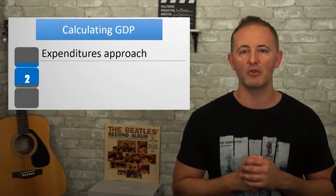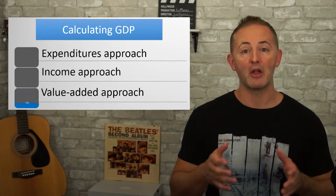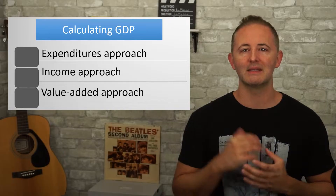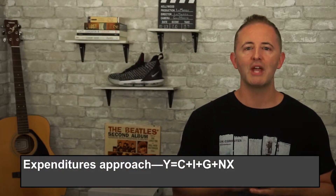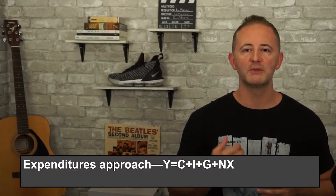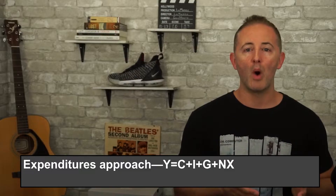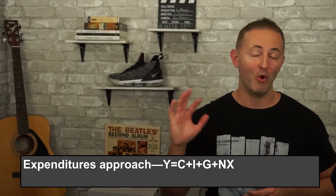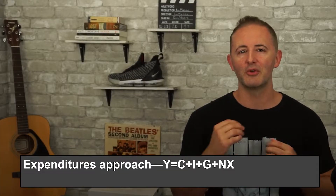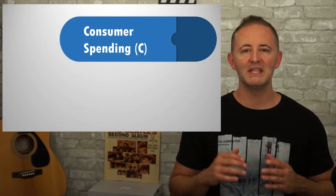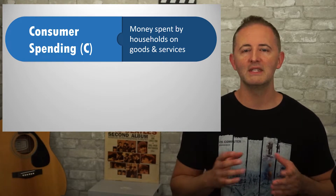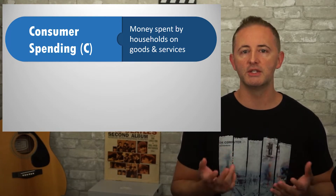There are three ways to calculate GDP, so that's our next job — learning how to calculate GDP. By far the most important way is known as the expenditures approach, which adds up total spending in the economy: Y equals C plus I plus G plus XN. Let's go through each variable and define them. C is for consumer spending or consumption — this is money spent by households on goods and services.